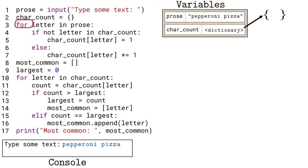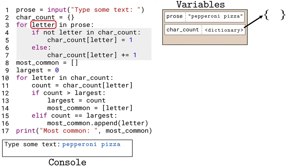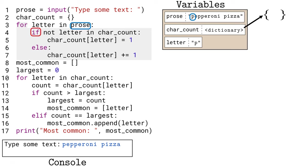This first for-each loop on line 3 repeats all the indented code after it, down to line 7. The loop will create a variable called 'letter', and 'letter' will step through every character in the 'prose' variable, starting with the first character, a lowercase 'p'. This conditional is the first code in the loop to run. The blue indented code on line 5 belongs to the if, and the red indented code on line 7 belongs to the else.